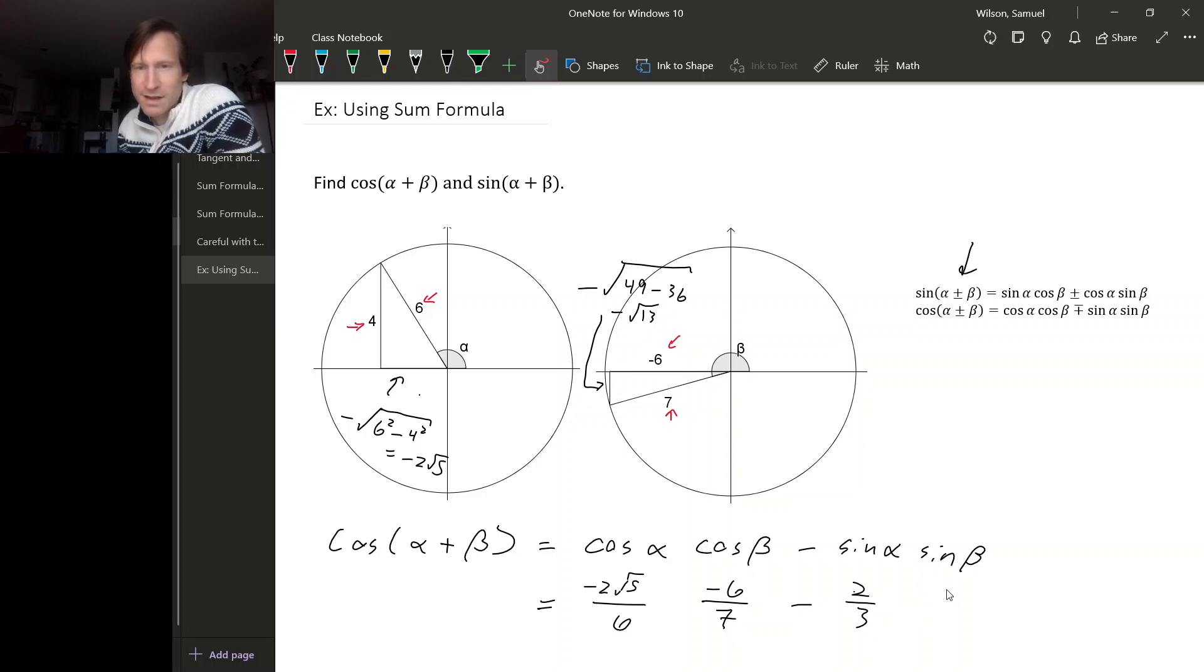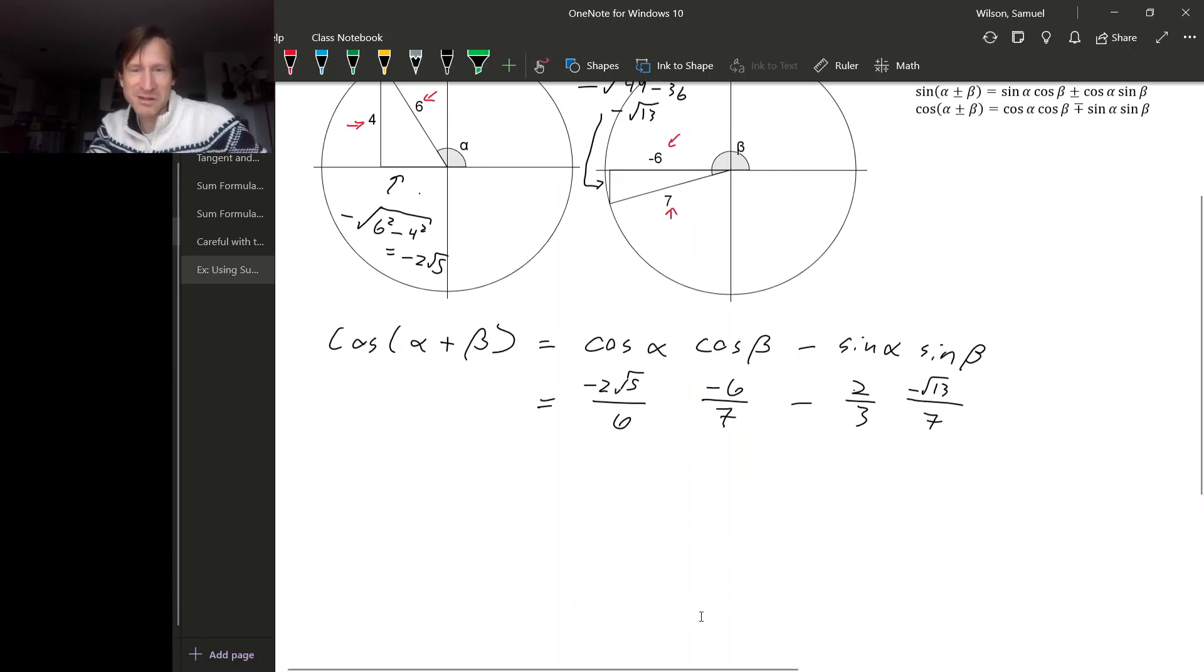And sin(β) is going to be -√13/7. And then we can simplify this a little bit—I mean, not a ton, but a little is better than nothing. So we can simplify this fraction, and we could simplify the 3 and the 6.